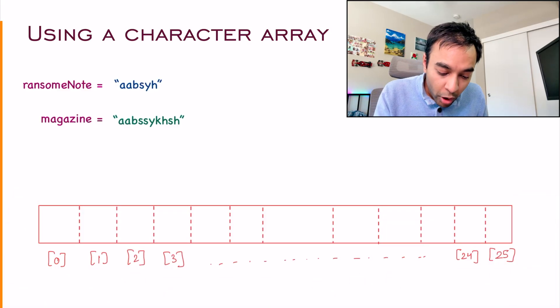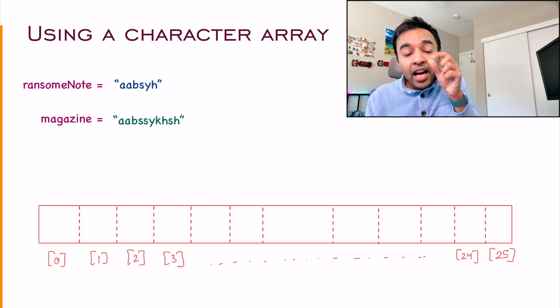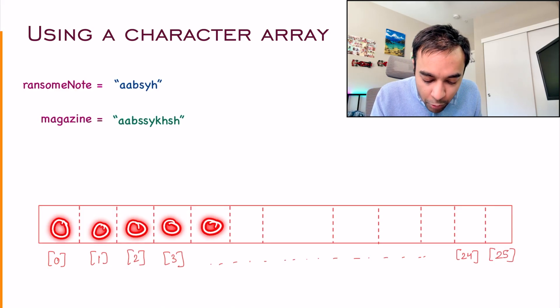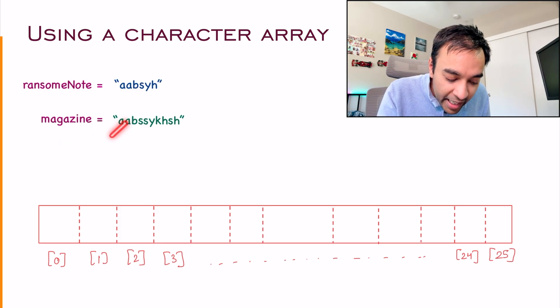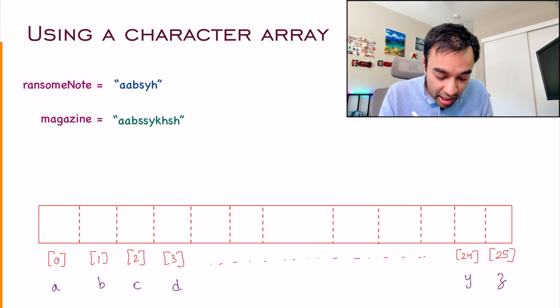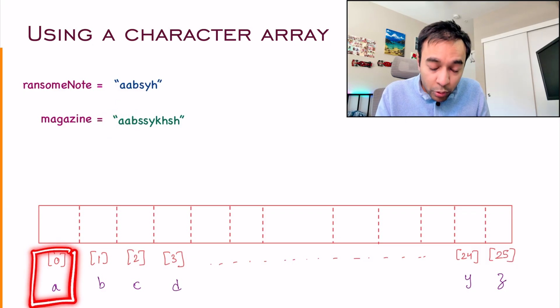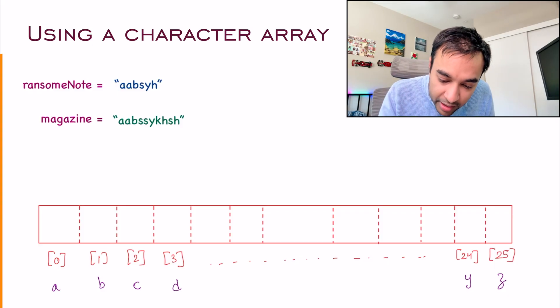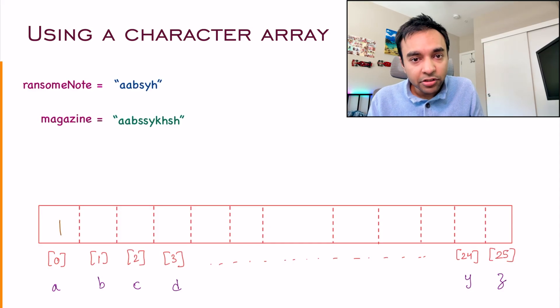0 represents an A, 1 represents a B, 2 represents a C, 3 is D and it goes on. So 24 is Y and 25 is Z. Now you know what index each character is representing. To begin your solution, you start looking at the magazine string and determine how many occurrences you have for each character. Initially, all of these values will be 0 and now I'm iterating over my string. What do I get? I get an A.